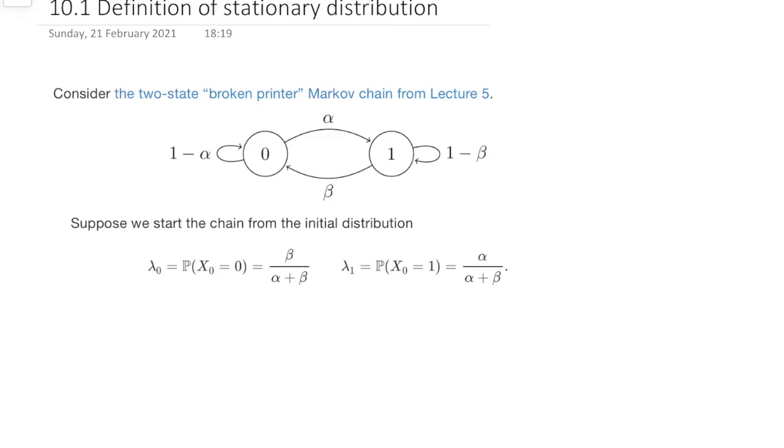And our example will be our old friend, the two-state broken printer Markov chain. So let's look at that. So, here it is, our old friend, the two-state broken printer Markov chain.